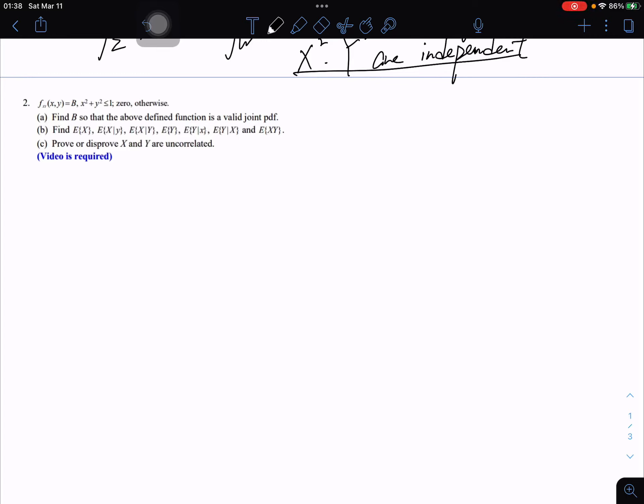Okay, let's look at question 2. f equals B and the xy range is x² + y² smaller than 1. The first question is find B so that the above defined function is a valid joint PDF.